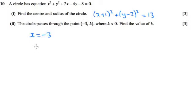So if we make x equal to minus 3 and put it into this equation here that we found in part 1, and substitute k in for y, if we then solve this equation, we'll get what k is.